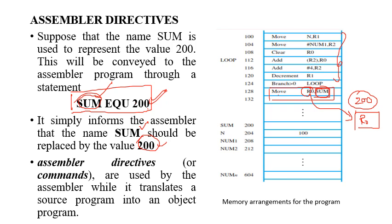This is how assembler directives are used. There are different types of assembler directives in assembly language programming. Each assembler directive has a particular task to perform. The directive statement does not denote an instruction — it will not be converted directly into machine code. Instead, the assembler replaces wherever there is 'sum' with the value 200, and this statement will never appear in the object program. In the object program, you will just find the equivalent value of 200.